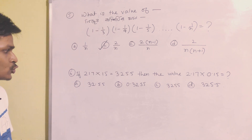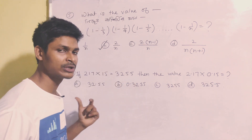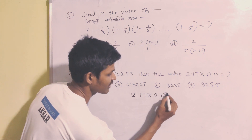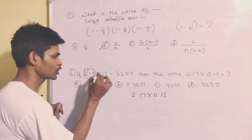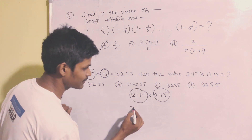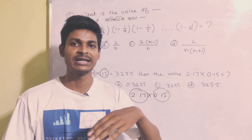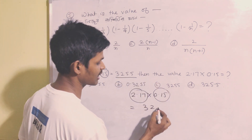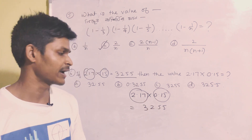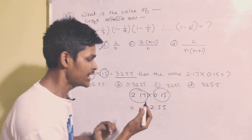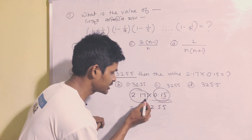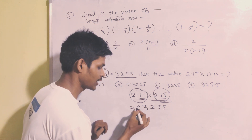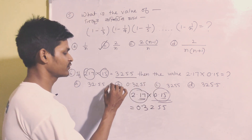Next question: If 217 times 15 equals 3255, then find the value of 0.3255. The answer is Option B.